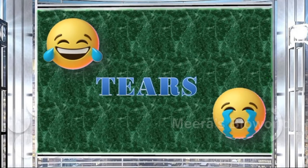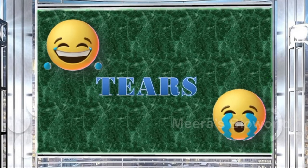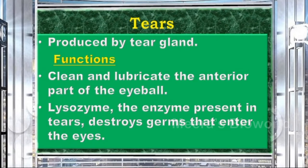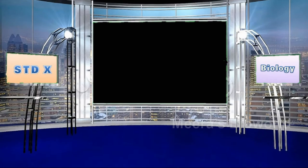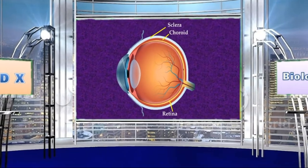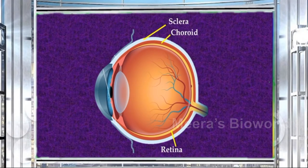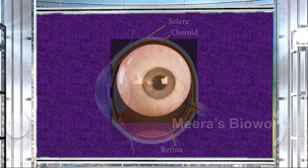Tears are produced by the tear gland. Their major functions are to clean and lubricate the anterior part of the eyeball. Lysozyme, the enzyme present in tears, destroys germs that enter the eyes.